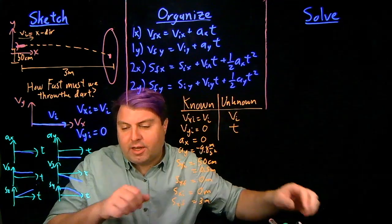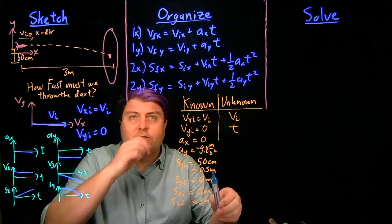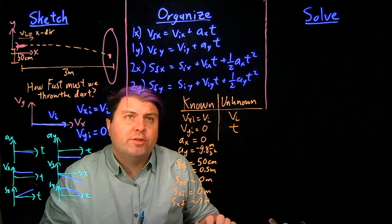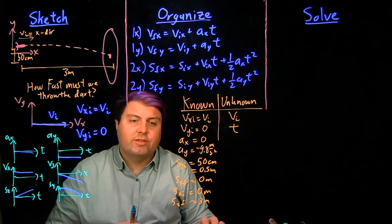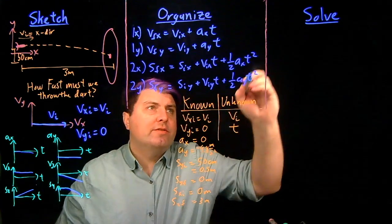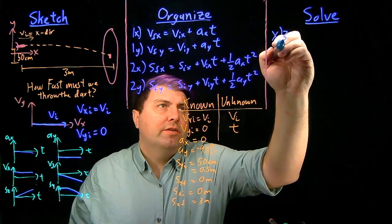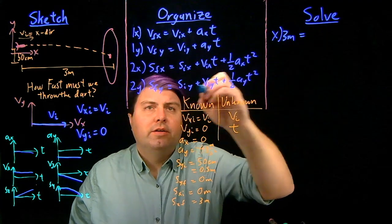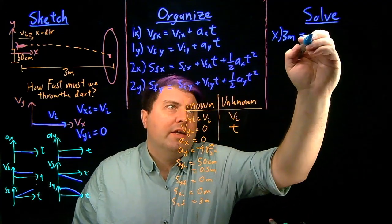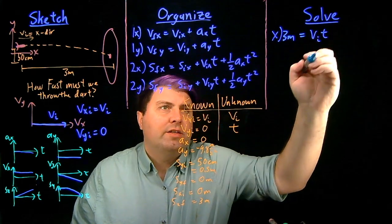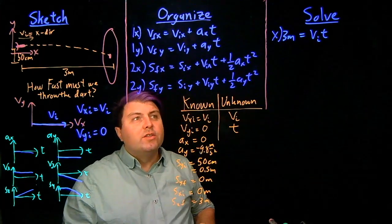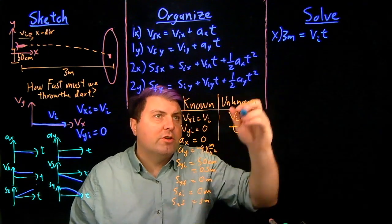So now it's time to solve. As we look through what we need, we don't have anything from our first two equations, so we're going to have to use our second two equations. For equation two, I know sfx is three meters, so in the x direction. I know six is zero, I'm not going to write it. I know vix is vi times t, and I know ax is zero, so I just have that. So I don't know t and I don't know vi, so I'm in a little bit of trouble.